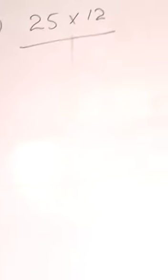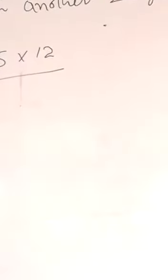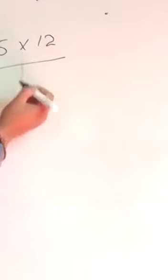Let's take an example. Ek cheez yaad rakhni hai: anything multiplied by zero is zero. Toh aaj humare paas example kya hai? Yahan pe hai — twenty-five multiplied by twelve. Yahan pe hum karenge.